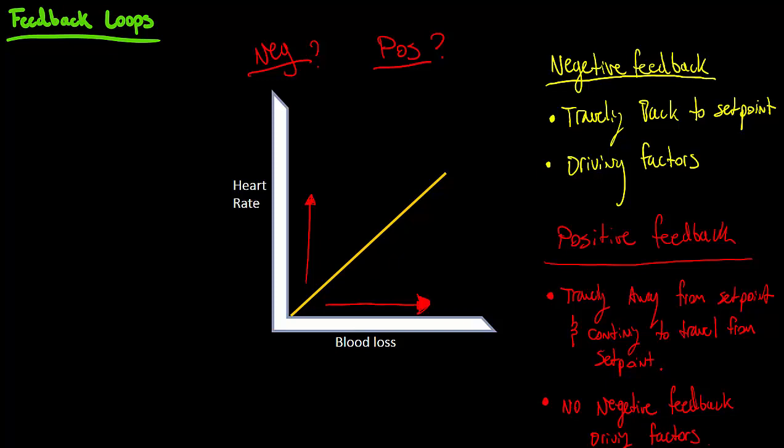That blood loss is causing a decline in their blood pressure, and if you have a major decline in your blood pressure, that's no good for your body. You can easily die from that. The heart rate is kicking up so that blood pressure can reestablish. We see a sign or a driving factor of negative feedback right there with the heart rate going up as blood is being lost.